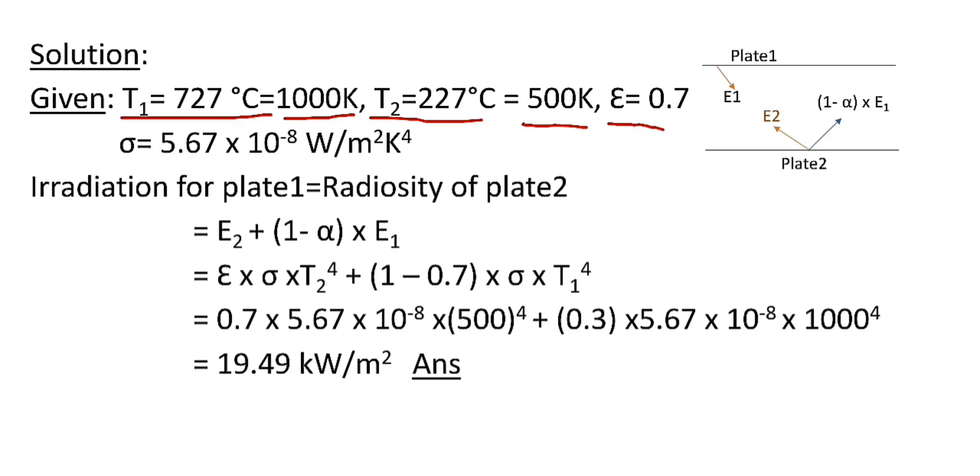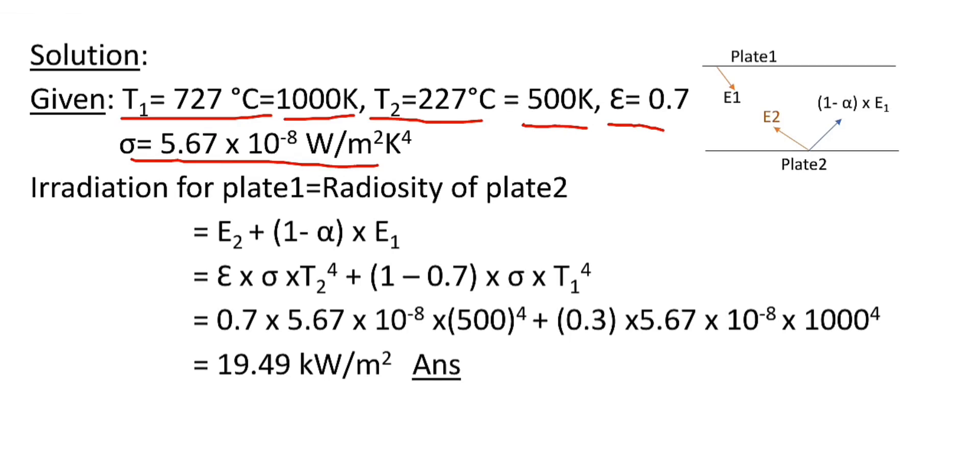Emissivity and Stefan-Boltzmann constant are given in the question. Since both plates have temperature greater than absolute zero Kelvin temperature, both bodies will emit radiation. Here E₁ is energy emitted by plate 1 and E₂ is energy emitted by plate 2.